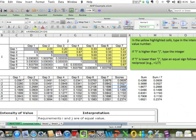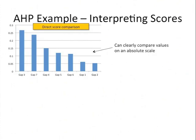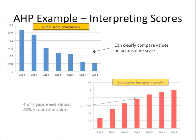Let's go back to our PowerPoint presentation, and we'll take a look at how we interpret those scores. So if you graph these just simply on the scores themselves, you can easily compare the values on an absolute scale. You can see what's more important than the other. Another way to look at this is you can look at the cumulative or the marginal benefits. So recall that gap 3 had a significant amount of value. So if you then take the gap with the largest score down to the smallest score and then compute the cumulative value of each of those, then you can see something interesting.